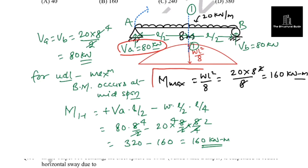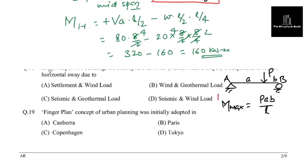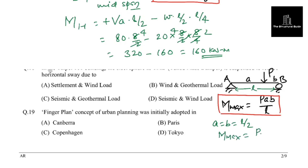The formula for maximum bending moment under UDL is WL squared by 8. For a point load P acting at distance A from the left support on a simply supported beam, the maximum moment under the load is PAB/L. If the load acts at midpoint, A equals B equals L/2, so the maximum moment equals PL/4.